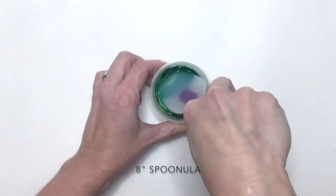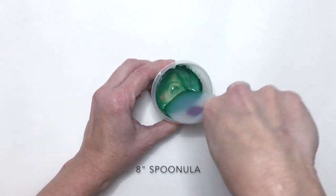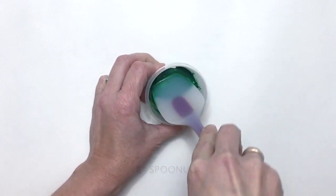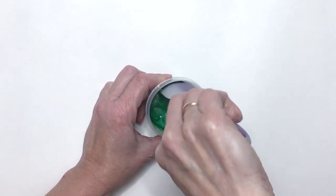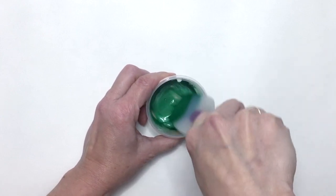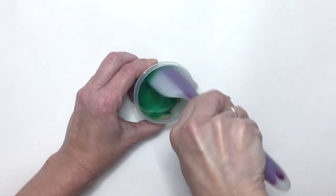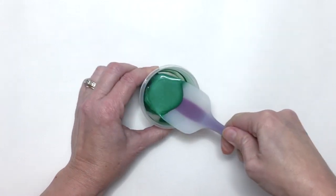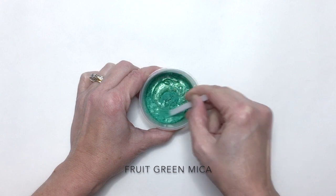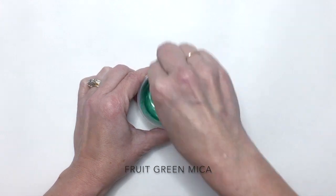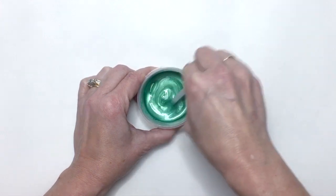I'll use a small spoonula to make sure all of the particles are mixed well. I'm also using fruit green mica which previously was the closest to a true green that I had, but it has a bit of a blue tint to it.